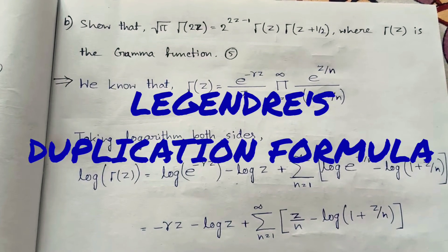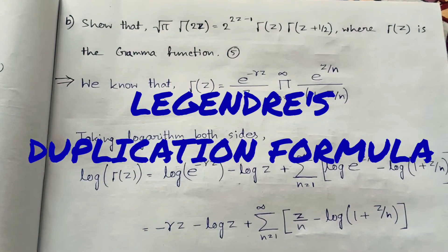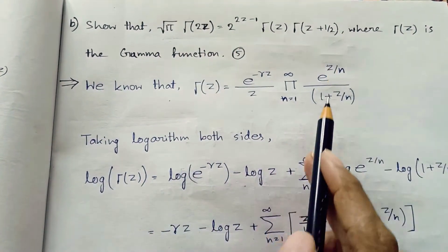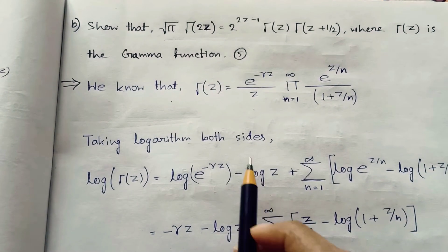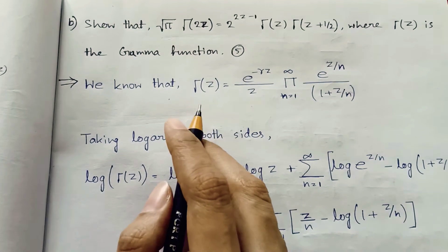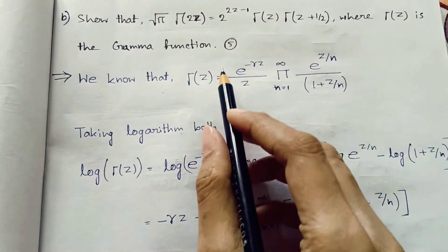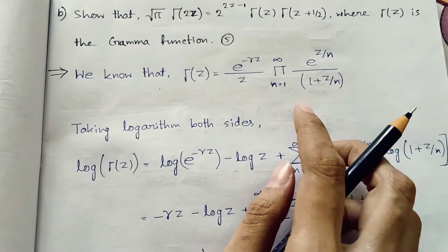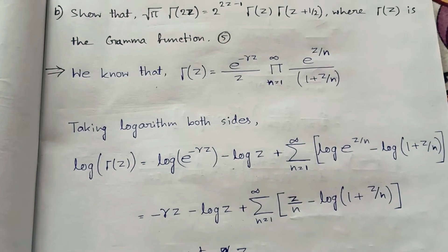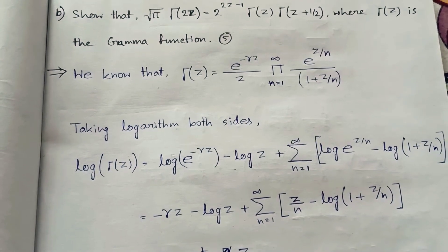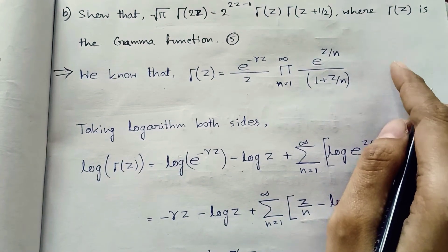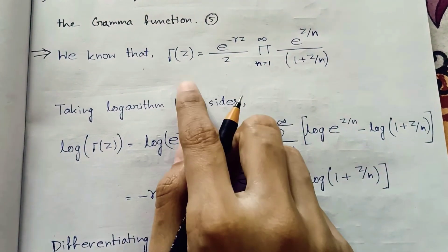In this video we are going to understand the proof of Legendre's duplication formula. Since we know that the gamma function can be written in several ways — as a product of infinite terms, as an improper integral, or in limit forms — in this video we are going to use the infinite product representation.